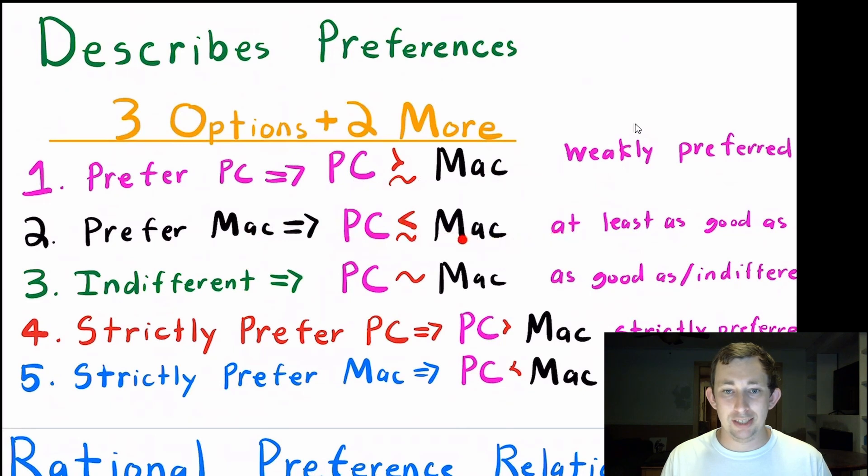Another way to interpret that is to say that a Mac is at least as good as a PC or a Mac is weakly preferred to a PC. We could be indifferent. Bill could be indifferent between a PC and Mac, and then we just say PC squiggly Mac. This is approximately, so the PC is as good as a Mac or Bill is indifferent between a PC and a Mac.